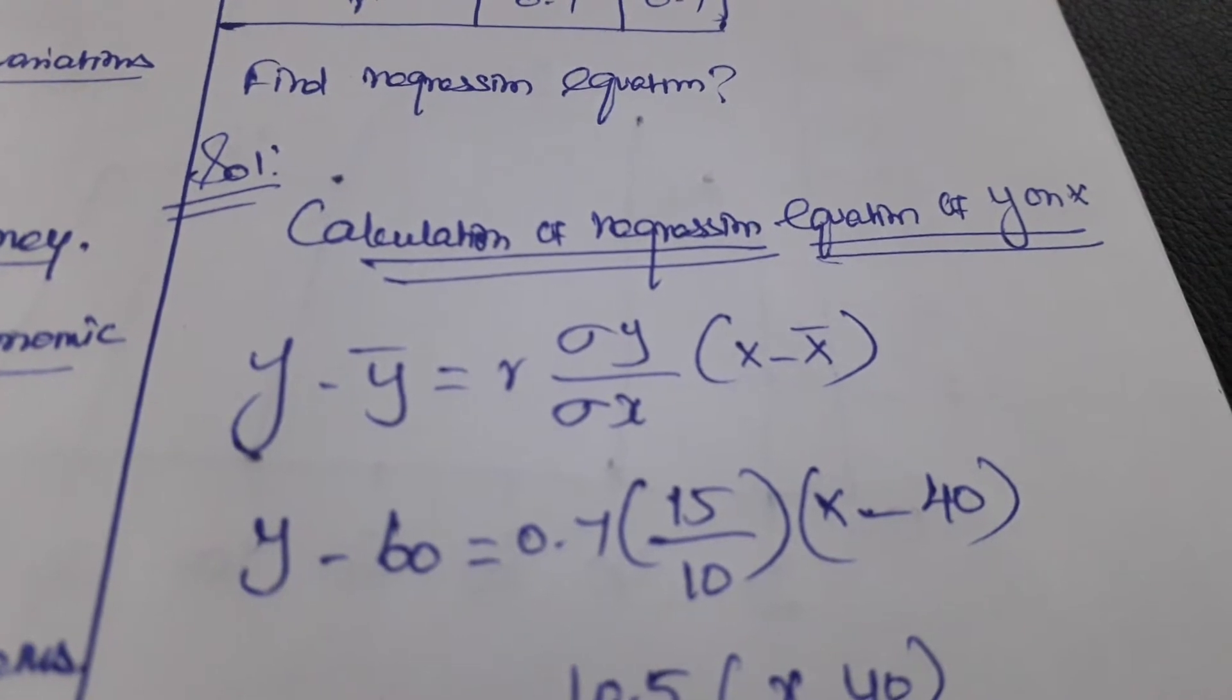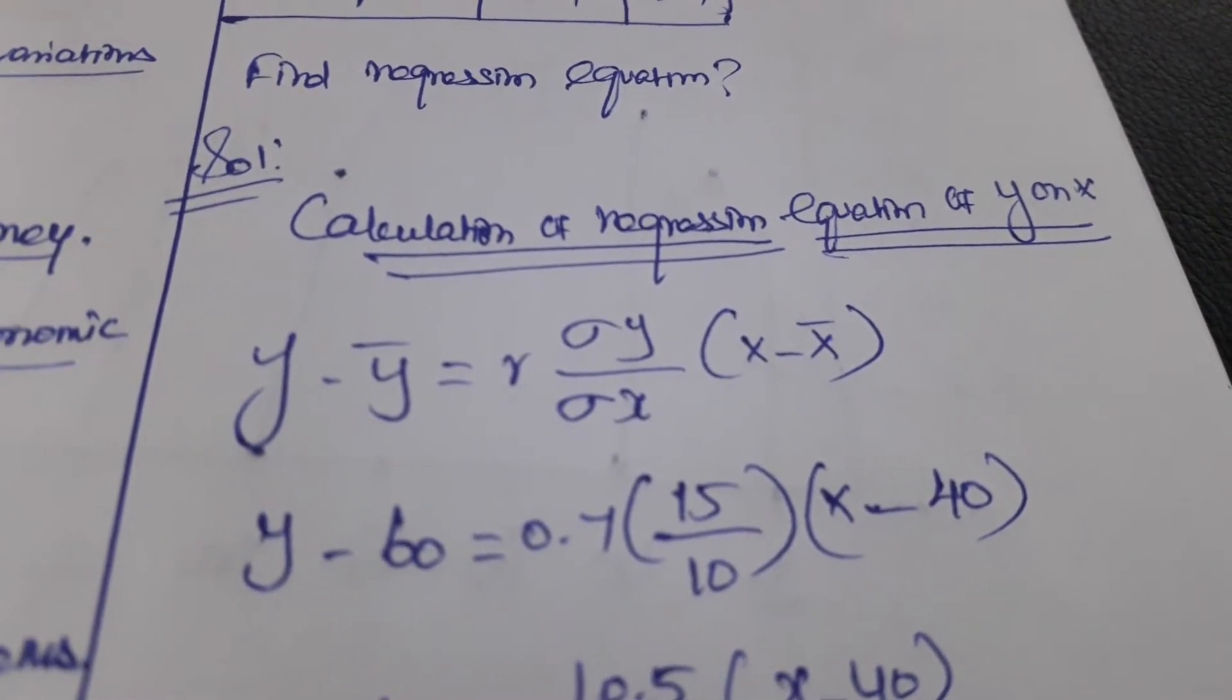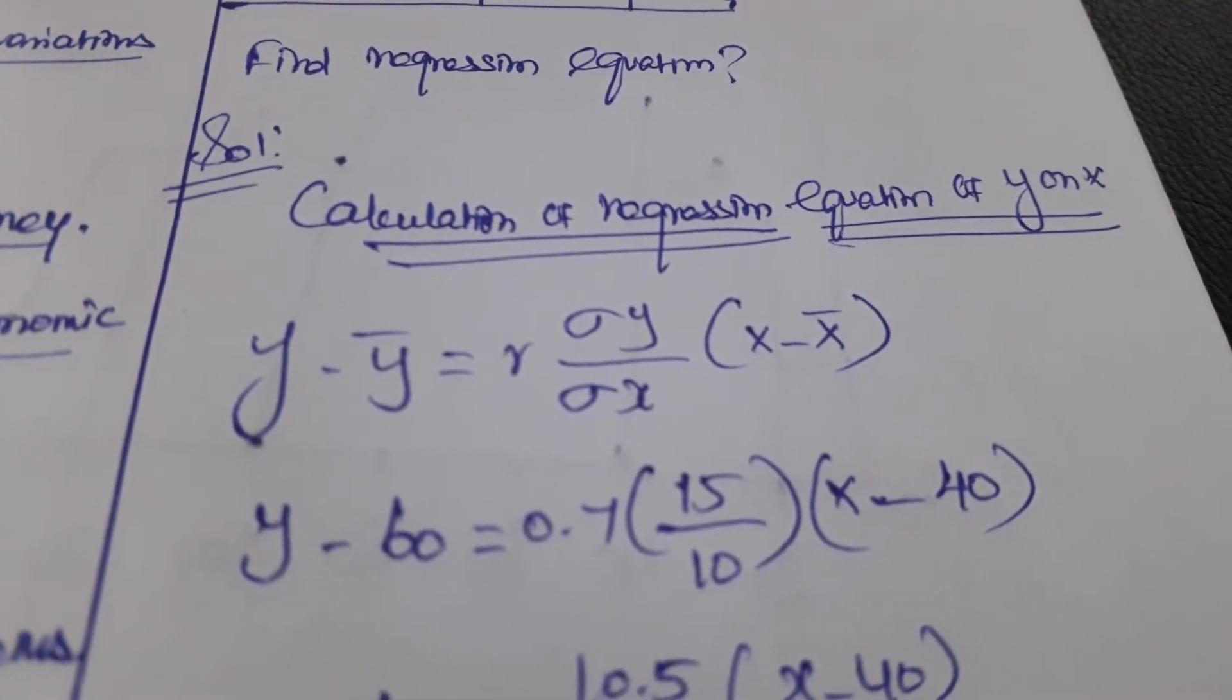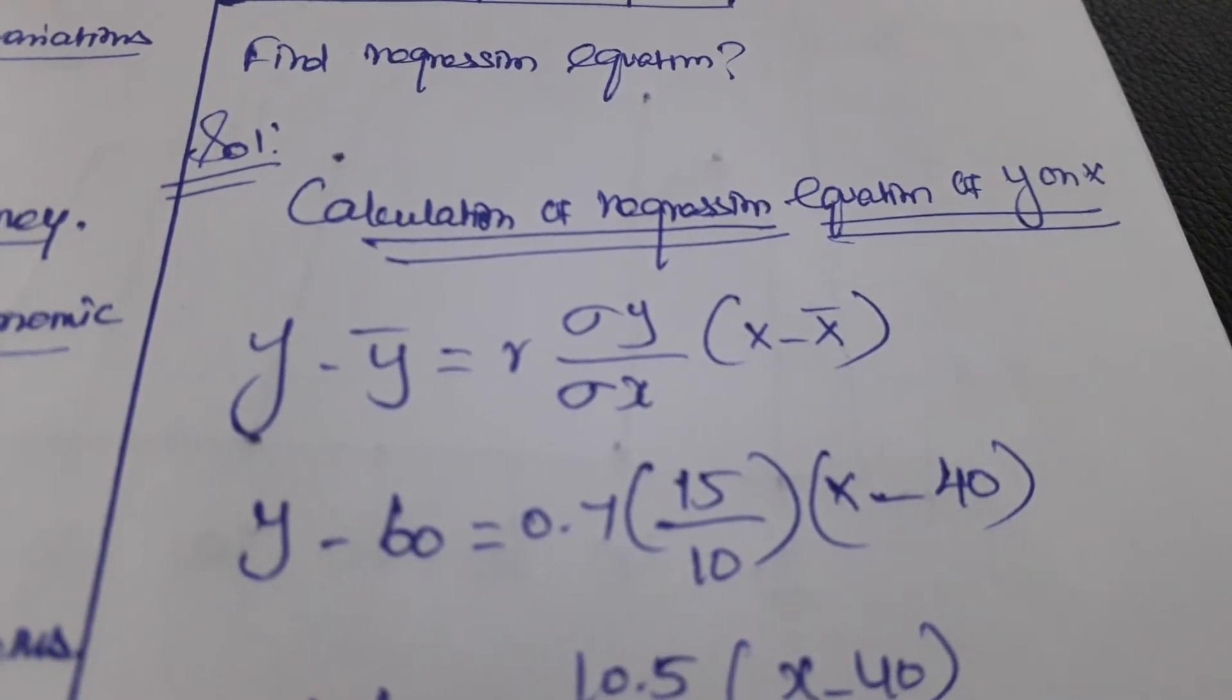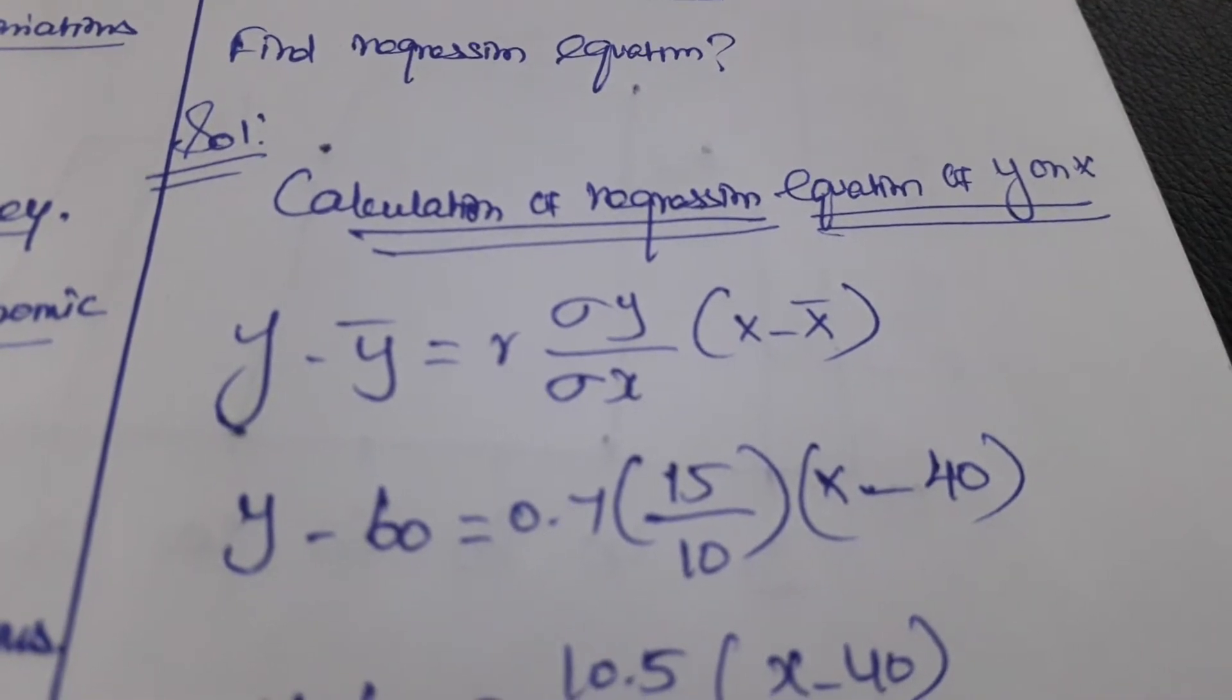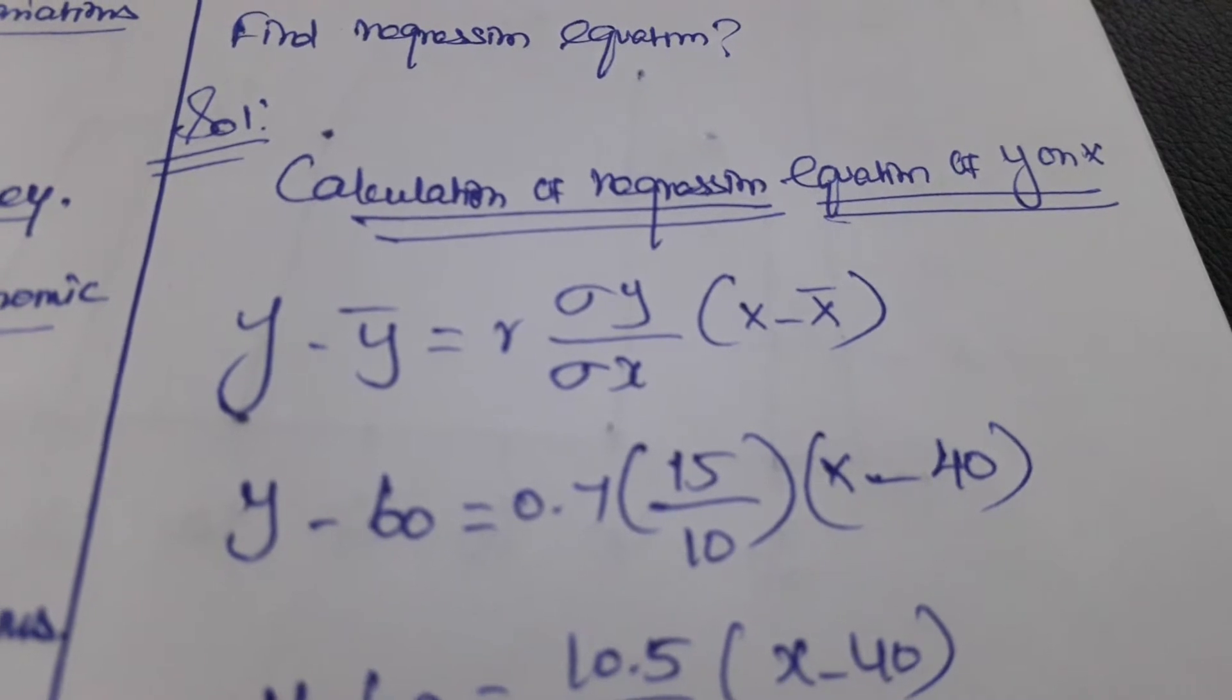Here is the formula: Y minus Y bar, or mean of Y, equals R times sigma Y upon sigma X, or standard deviation of Y upon standard deviation of X, times X minus X bar, or X minus mean of X.